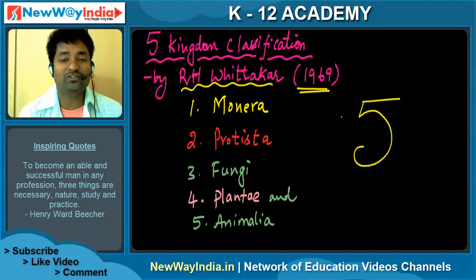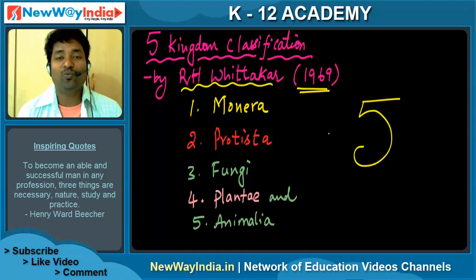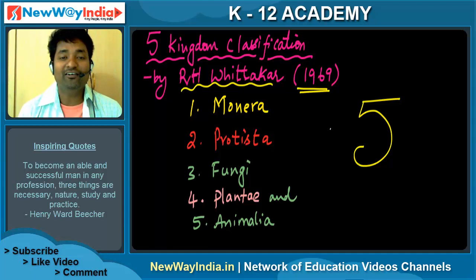You need to understand five kingdoms. What are those five? One is Monera, one is Protista, one is Fungi, one is Plantae, and one is Animalia. Try to memorize these five kingdoms.